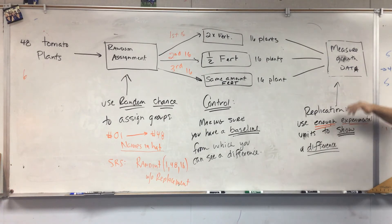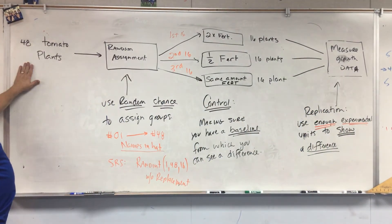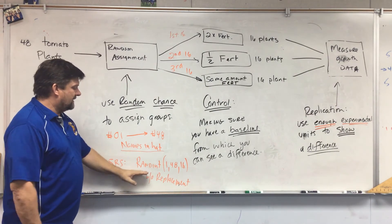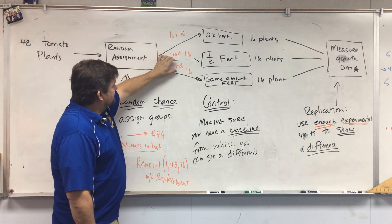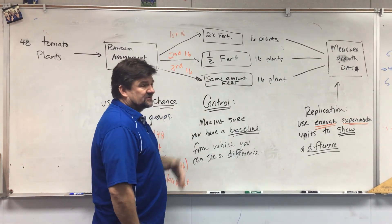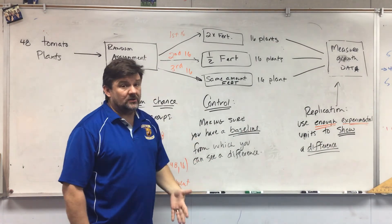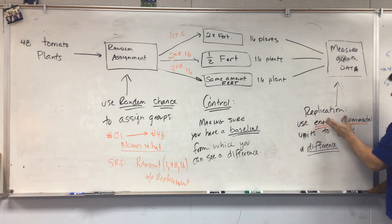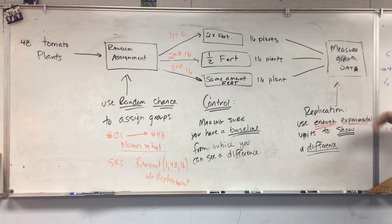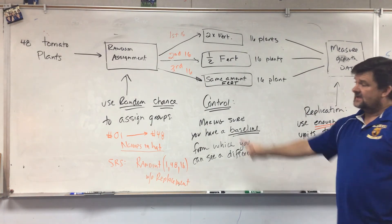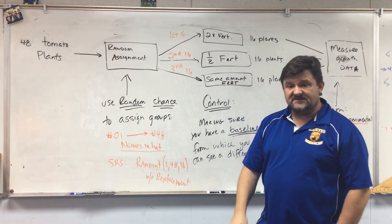To summarize a completely randomized design: use random assignment via names in a hat or a random number generator on your calculator; assign each unit to equal groups; assign treatments where one is usually a baseline — the control; take measurements; and use enough experimental units to find a difference or no difference. The key piece is being able to explain the random assignment process — names in a hat is the easiest way to explain it.